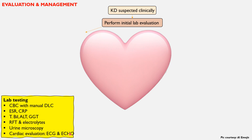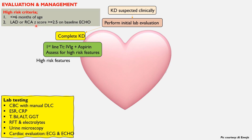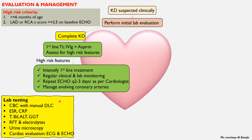If the patient fulfills criteria for complete Kawasaki disease, treat with first-line management — IV immunoglobulin and aspirin — and assess for high-risk features: age less than or equal to six months, or LAD/RCA Z-score more than or equal to 2.5 on baseline echo. If high-risk features are present, intensify first-line treatment. Regular clinical and lab monitoring is needed, with repeat echocardiogram every two to three days or as per the cardiologist's opinion, managing evolving coronary arteries.